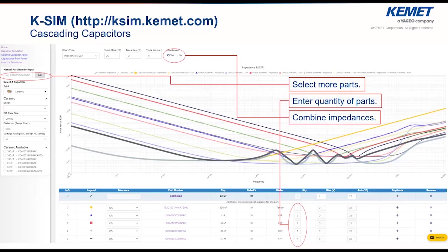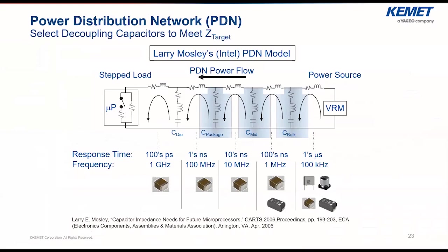Here's a quick real-world example of a PDN designed by Larry Mosley of Intel, demonstrating how as frequency increases and we move closer to the target, the capacitor types change. At lower frequencies, you need higher cap values — things like aluminum polymers, tantalum polymers, film capacitors above 40 volts, or ceramics. As you move closer to the load and frequency increases, you need better frequency response, lower ESL, lower ESR, and lower cap values — which generally means ceramic capacitors.